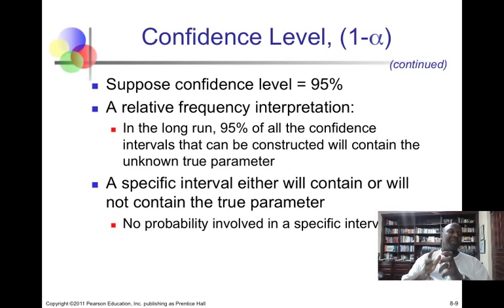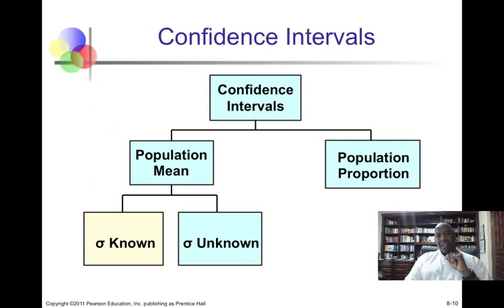5% chance, which is the remainder, that it would not be in the interval, and that's the significance level alpha. So we call that the risk or the probability that the interval does not contain the mean.